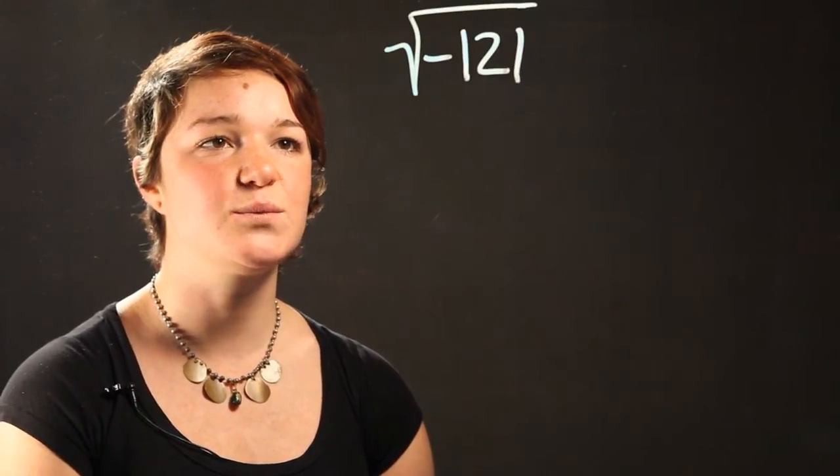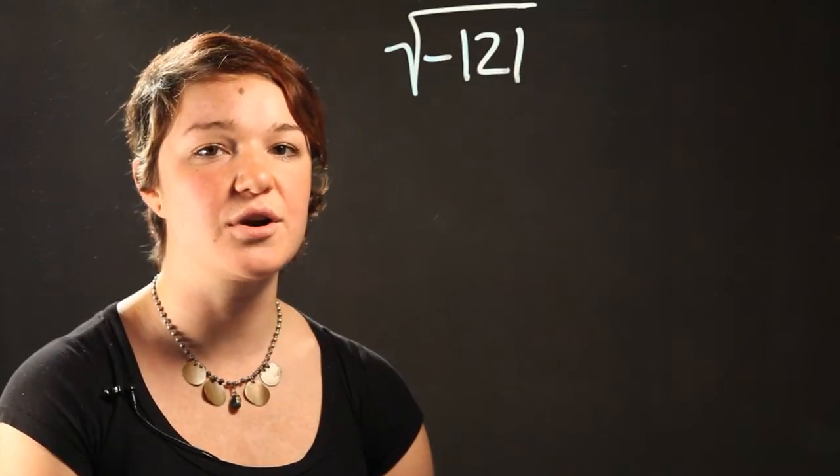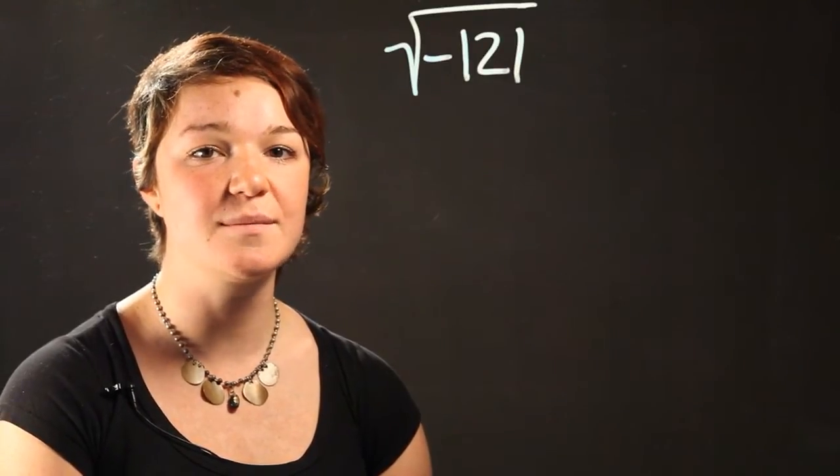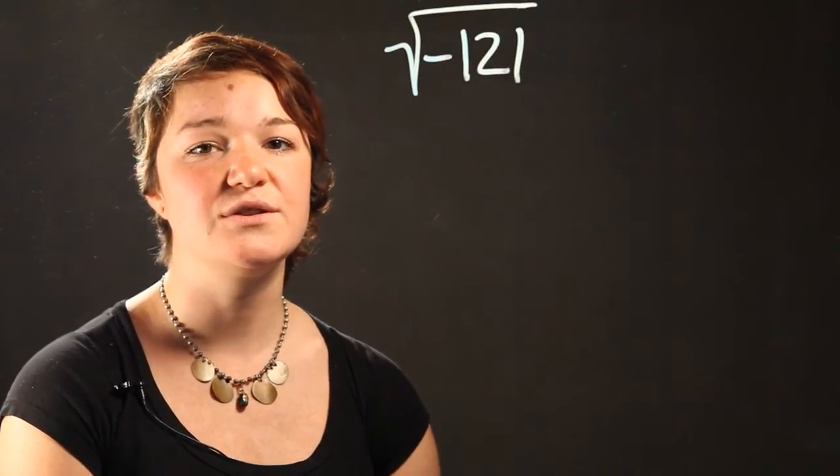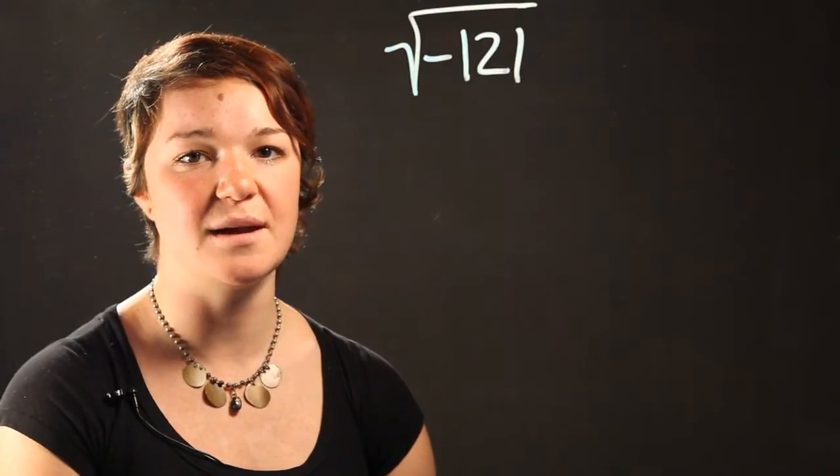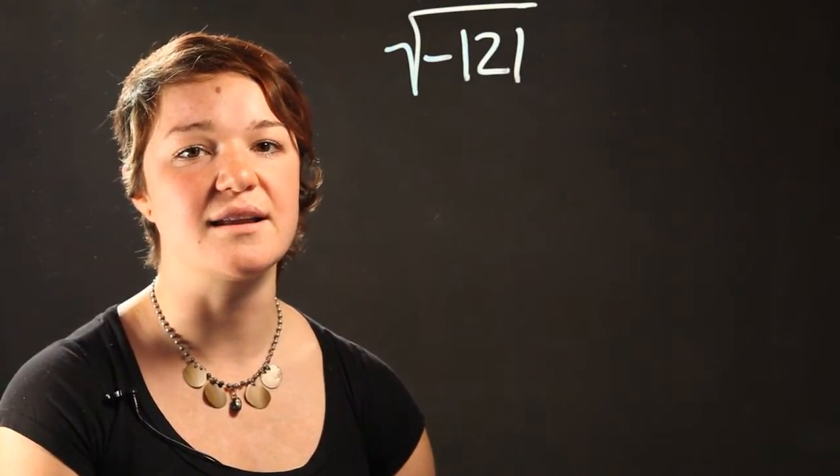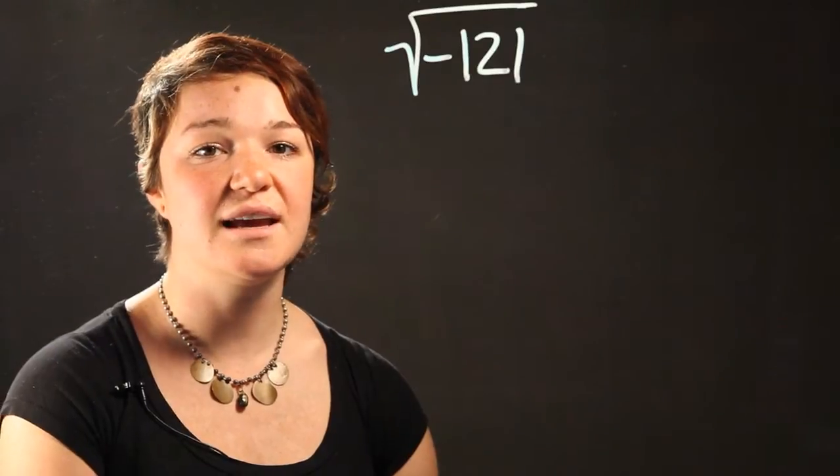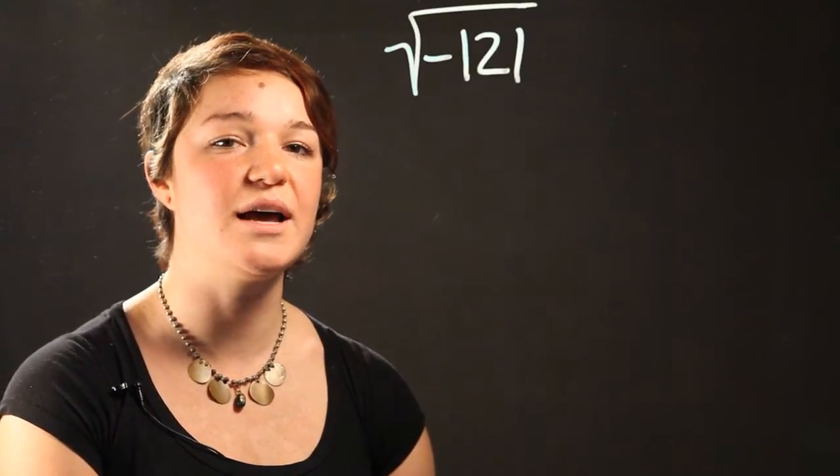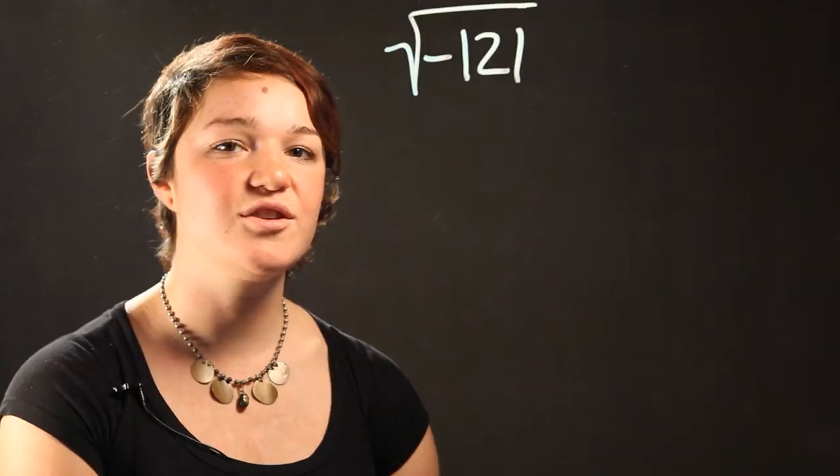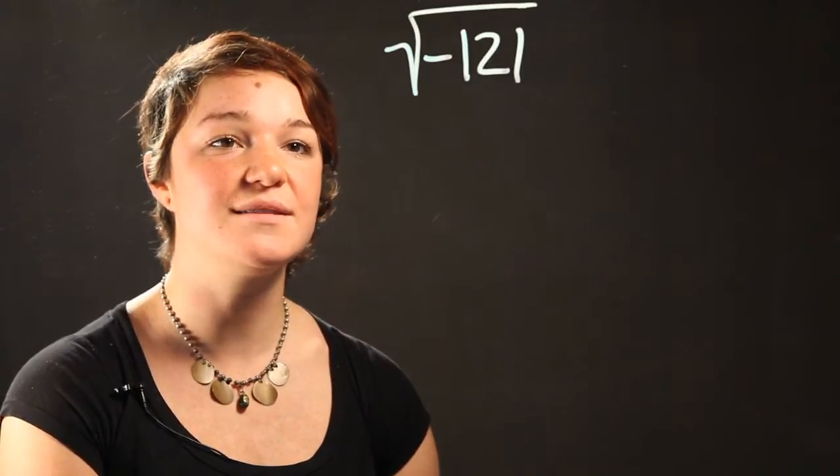And likewise, when you multiply a negative number by itself three times, it's going to be negative. So negative 1 times negative 1 times negative 1 is still negative 1. But if you take negative 1 and square it, or just take negative 1, multiply it by itself, then you're going to be left with positive 1.